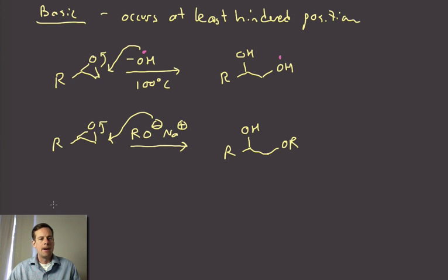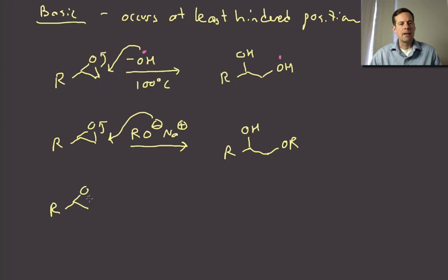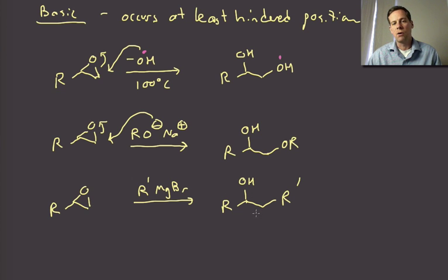And then we can also do things like Grignard reagents. If I treat an epoxide with a Grignard reagent, again after the protonation upon workup, I can form a new carbon-carbon bond. So I add in my Grignard into that epoxide and I get my secondary alcohol out of that. So that's a very useful use of an epoxide.